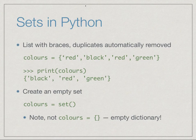Since the empty brace notation is already used for the empty dictionary, if we want to create an empty set we have to call the set function as follows: colors equal to set() with no arguments.